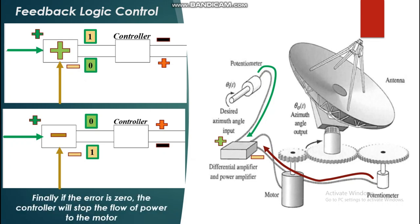Finally, in Case 3, when the error reaches zero, the controller stops the flow of power to the motor so the antenna stays at its position, since the actual position now equals the desired position. These are the three possible logic conditions for controlling the rotation of the antenna in a closed-loop automated system.